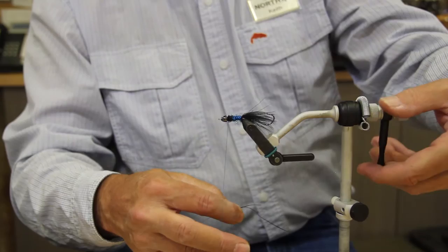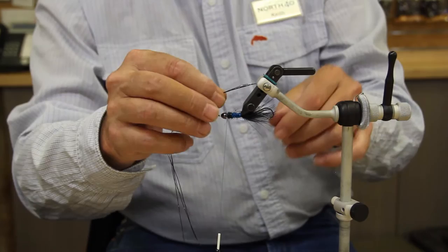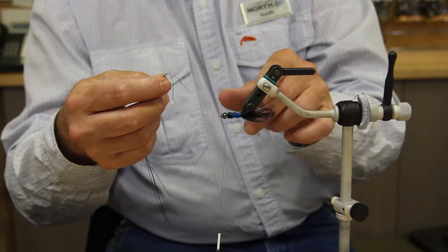And we're going to turn that upside down. Then we're going to tie this in at the bottom first. And again, you're going to want these to run just about to the edge of the tip of the bend of the hook.